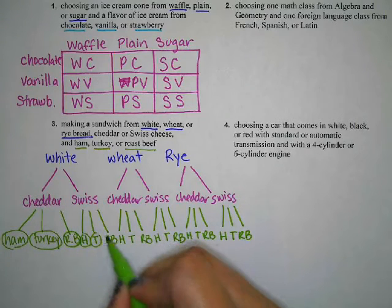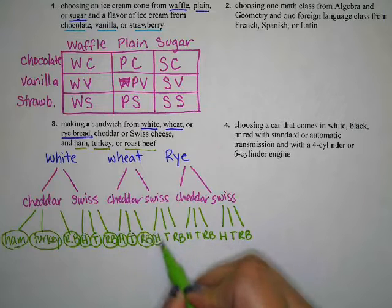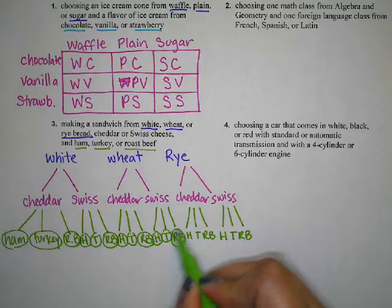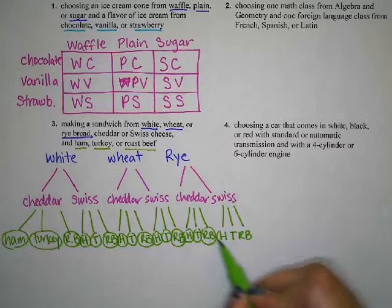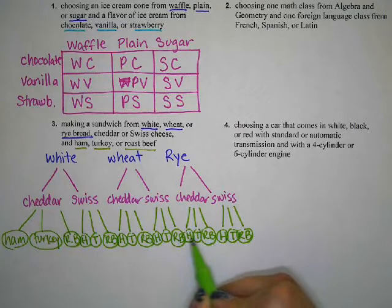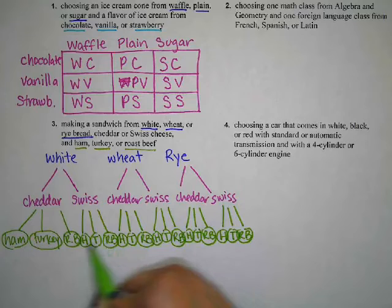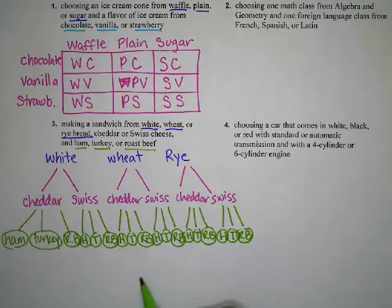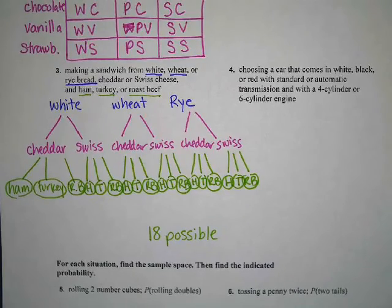Let's go ahead and circle all the different choices, because this tells us how many outcomes we could actually have. Counting them up, there are 18 possible outcomes of sandwiches.